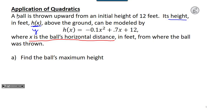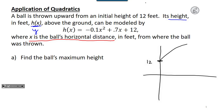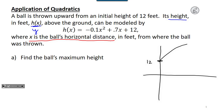Looking at that function, we can draw a rough sketch of what this would look like. This is a quadratic, so it's going to be a parabola. The fact that the number in front of x squared is negative tells us we're going to have a parabola that opens down. Starting at a height of 12 feet, this ball is thrown upward, and eventually — because gravity takes over — it's going to come back down.